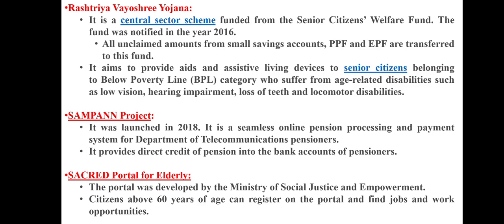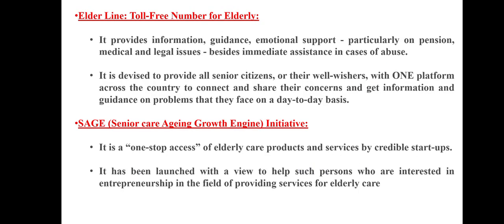The SAMPAN Project, launched in 2018, is a seamless online pension processing and payment system for Department of Telecommunication pensioners, providing direct credit of pension into pensioners' bank accounts. The SACRED Portal, developed by the Ministry of Social Justice and Empowerment, allows citizens above 60 years of age to register and find work opportunities. The Elderline toll-free number for the elderly provides information, guidance, and emotional support — particularly on pension, medical, and legal issues — and immediate assistance in cases of abuse, connecting senior citizens across the country on a single platform. SAGE, the Senior Care Ageing Growth Engine initiative, is a one-stop access platform for elderly care products and services by creditable start-ups, launched to help those interested in entrepreneurship in the field of elderly care.